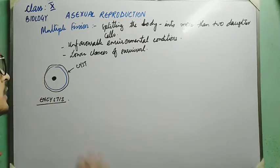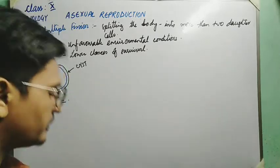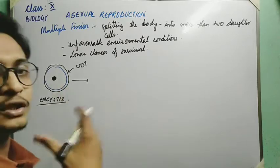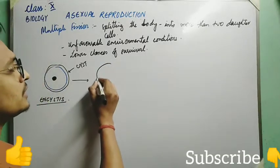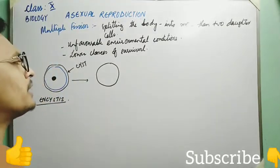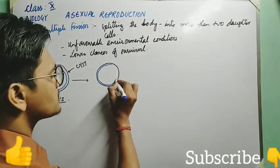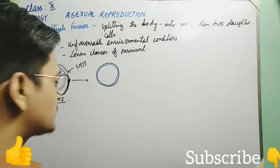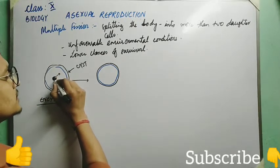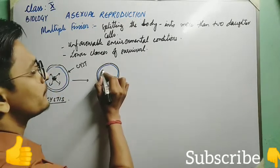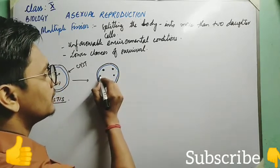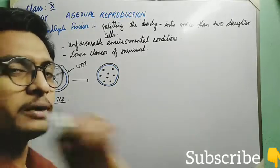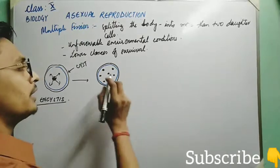Under this cyst, within the cyst, the nucleus will undergo many divisions — it will divide again and again repeatedly. Many fragments of the nucleus will form inside the cyst. The cytoplasm will also divide around each nucleus fragment, forming many new cells inside the cyst.